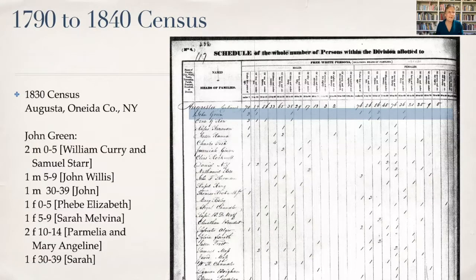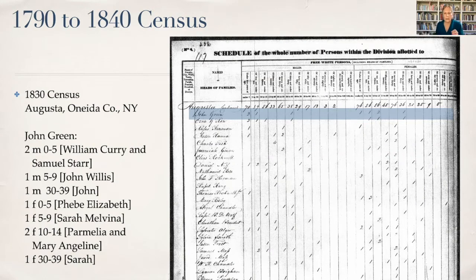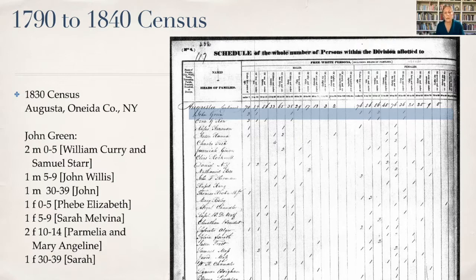This is the 1790 to 1840 census, and it's a little trickier to use, but once you get the hang of it, it does have a lot of information. This is an 1830 census from Augusta, Oneida County in New York — John Green is there in blue, a relative of mine. The markings represent children or people in his household. The first column says there are two children between the ages of zero and five, but doesn't give the names of those children. So I've had to go tracking down other sources like baptismal records or wills to try and figure out who those children were.